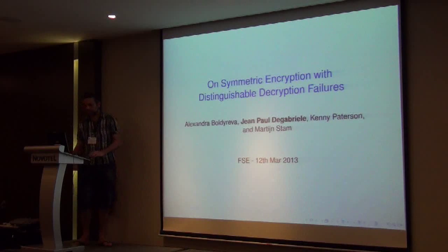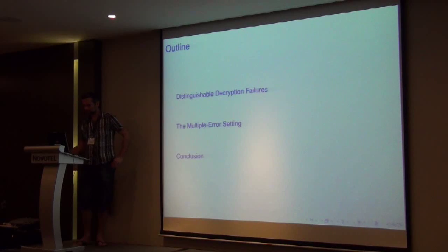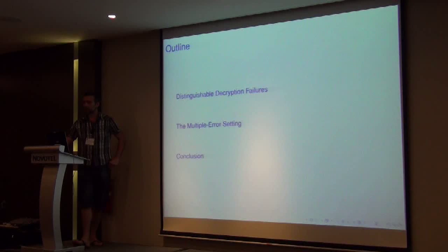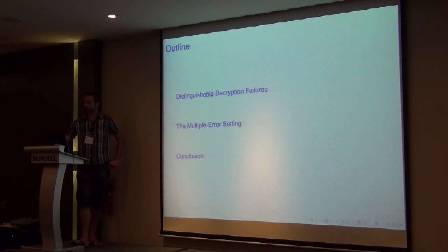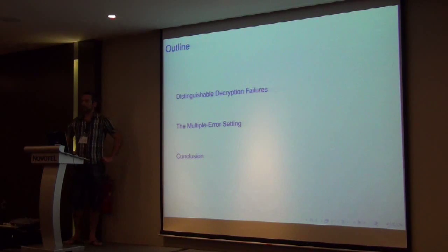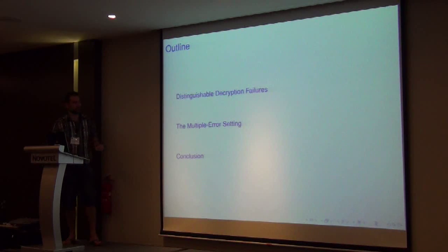This is joint work with Jean-Paul DeGabrielle, Kenny Patterson, and Martin Stamm. My talk will consist of two main sections. I will start with some motivation, describe what distinguishable decryption failures are, and point out the gap they raise between theory and practice. Then, as a proposed solution, I'll propose the multiple error setting, which requires a change in the syntax of encryption schemes. Since this change results in a different object theoretically, we'll have to revise some of the theory we know about encryption.